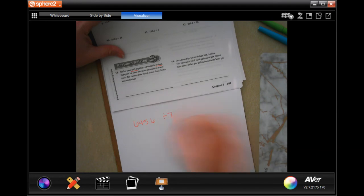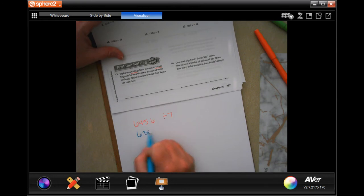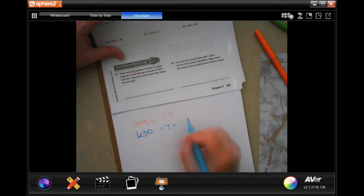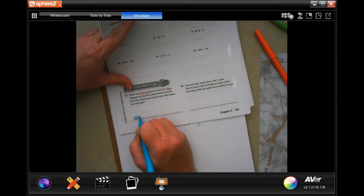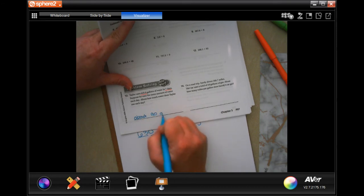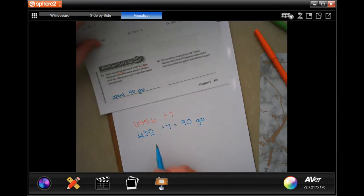So 645.6 divided by seven would be our original problem. Now I would probably make that 630 because I know that seven goes into 63. So seven goes into 63 nine times, and then I would add that zero on - 90 gallons. About 90 gallons. Show your work so that they know how you got there, but that's a reasonable answer.